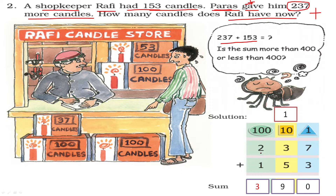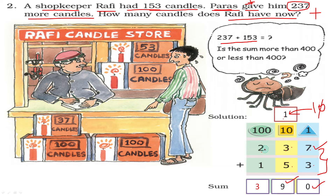Write 237 first, then 153 below it. Add these two numbers. 7 and 3 make 10 — write 0 down, 1 carry over. 5 plus 3 is 8, plus 1 carry is 9. 2 plus 1 is 3. So the total number of candles is 390.